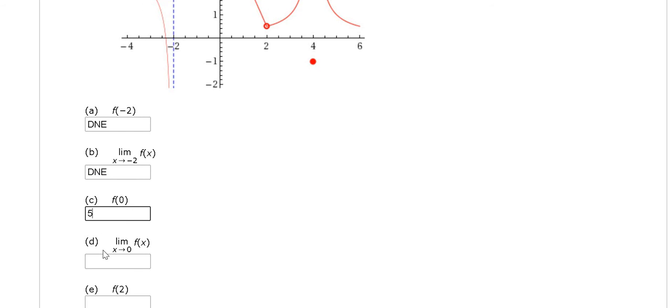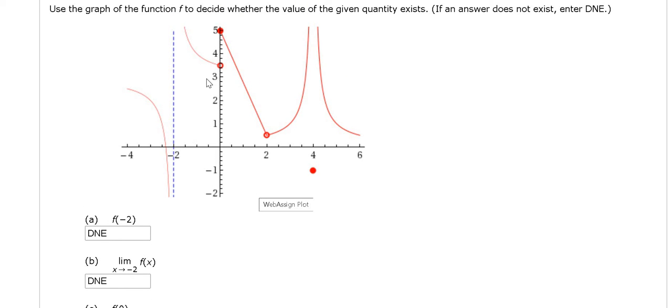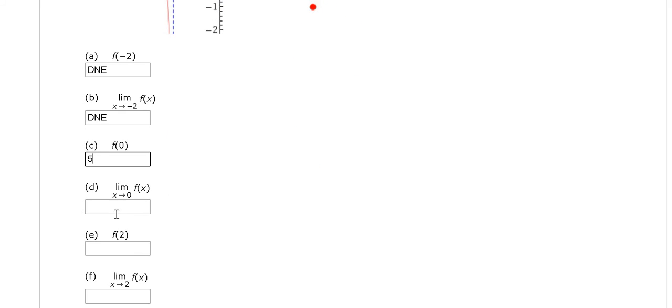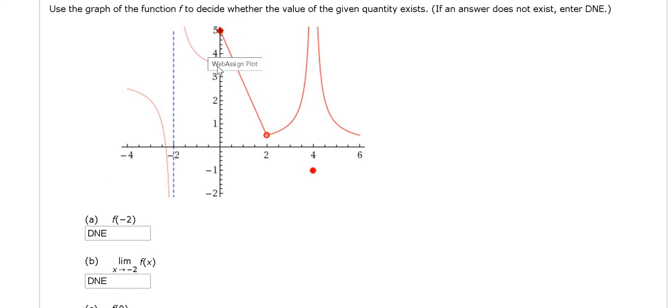Now we want the limit as x approaches 0. As x approaches 0, from the left, it looks like we get maybe 3.5. From the right, it is 5. So these are different numbers. In this case, it does not exist, so DNE. From the left, it was 3.5. From the right, it's 5. These are not the same number, so it does not exist.